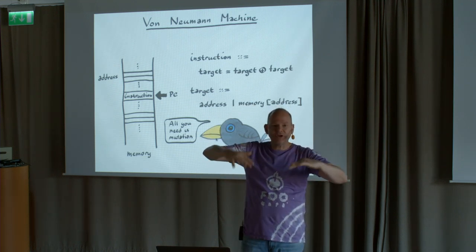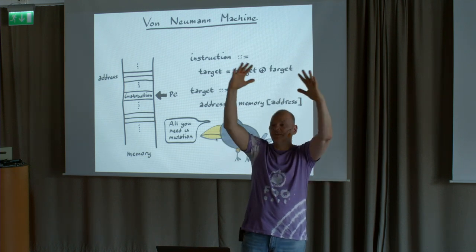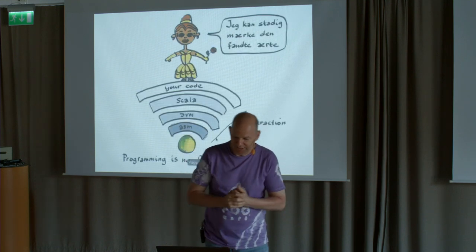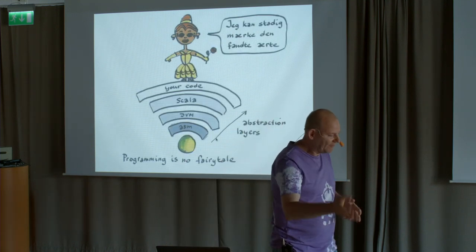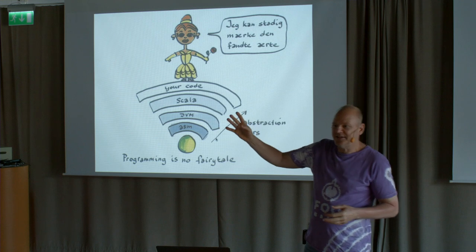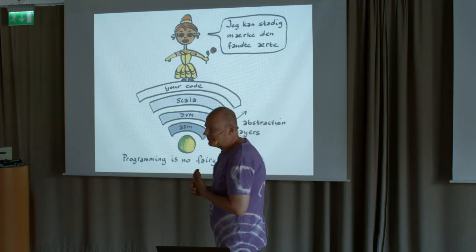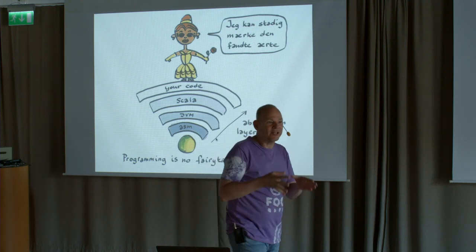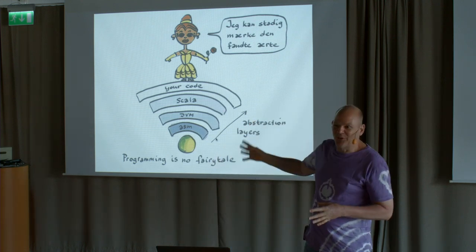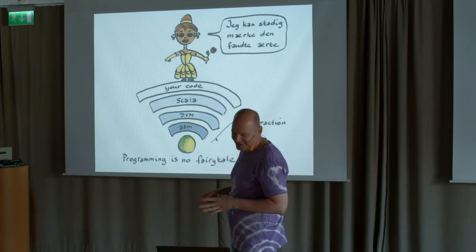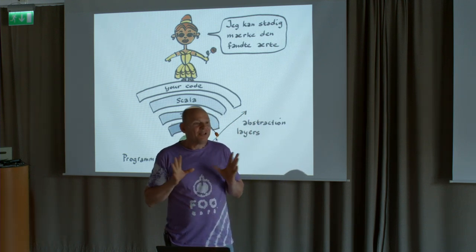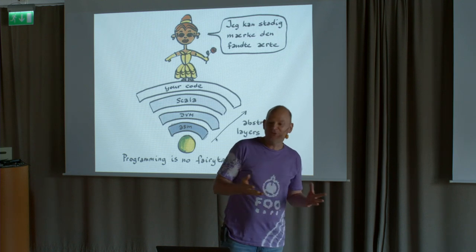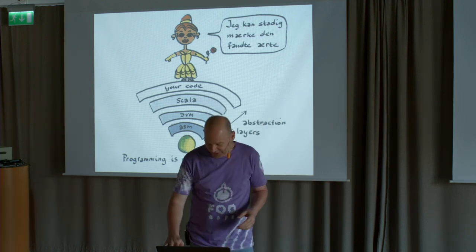On top of that, we're trying to hide that reality and build some grand abstraction. So we have layer after layer after layer. But just like in the fairy tale of the princess and the pea, you can always feel the pea — it's always there, you just can't hide it. Programming is not a fairy tale. So how can we make programming into a fairy tale? That's the question.